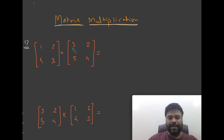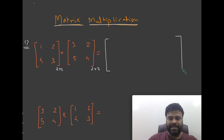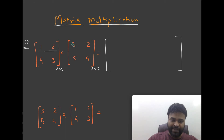Let us multiply these two matrices. It's a simple 2 by 2 matrix multiplied with another 2 by 2 matrix. For matrix multiplication you have to remember one point: you have to multiply the row of the first matrix with the column of the second matrix.